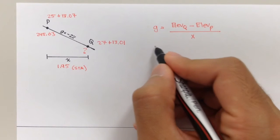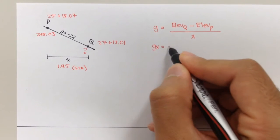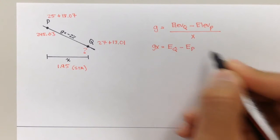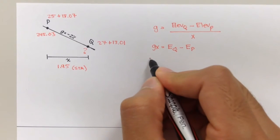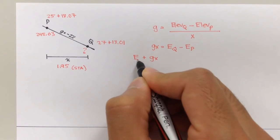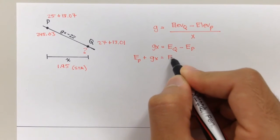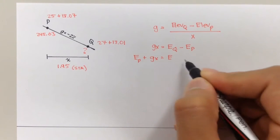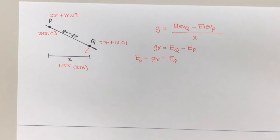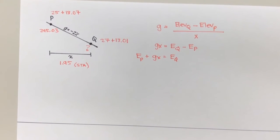we get elevation of Q minus elevation of P. And then if we added elevation P to both sides, we get elevation P is equal to elevation, or elevation P plus GX is equal to elevation Q. So this is the formula we're going to use to solve this problem.